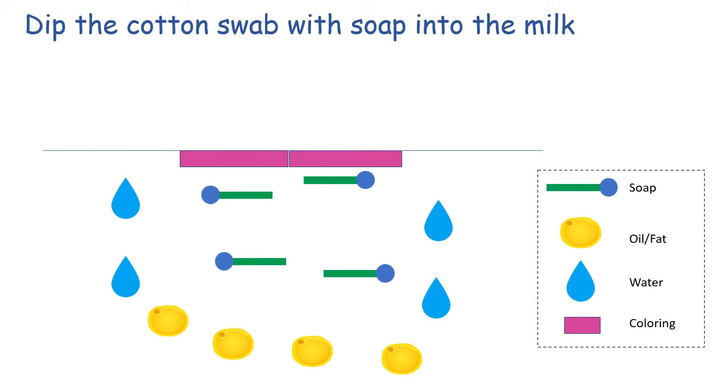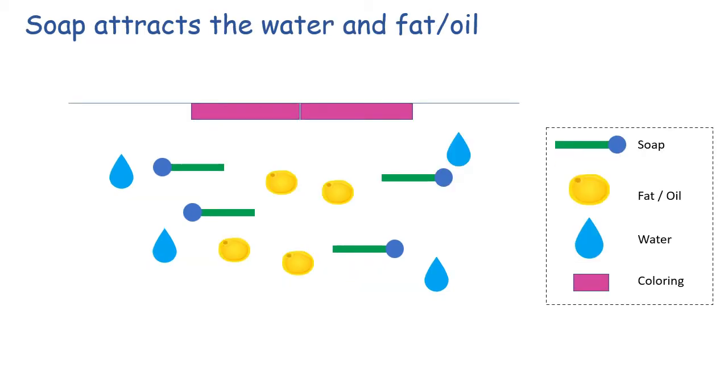Meanwhile, the dot with a stick refers to the cotton swab and pink bar represents the colourings used. In this slide, we will observe the chemical reaction happening when we dip soap into milk.